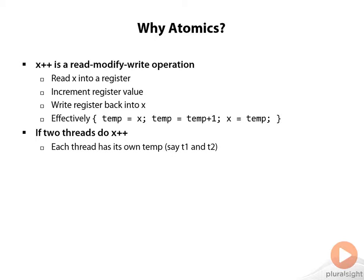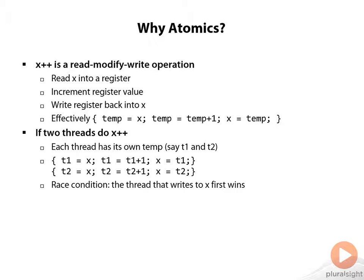we get a bit of an ambiguity because each thread gets its own temporary variable to store the value x to, and then they both do the same thing. And if these two sequences of execution overlap, then we get what's called a race condition.